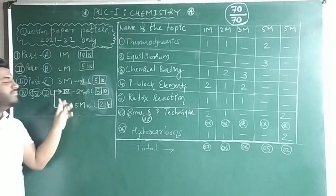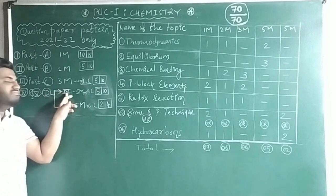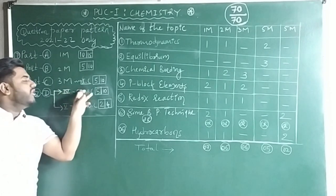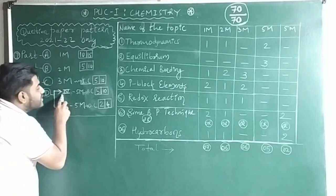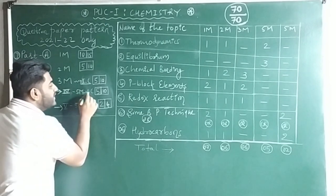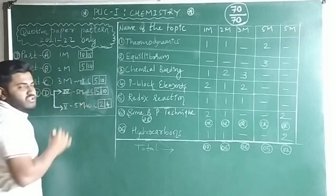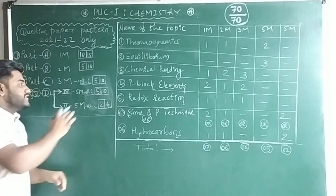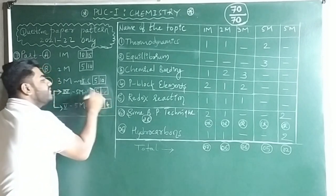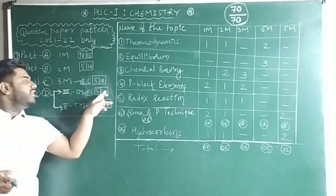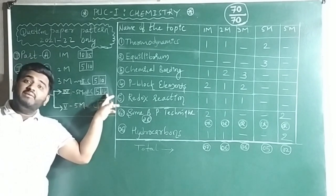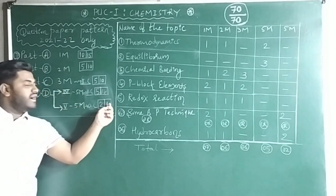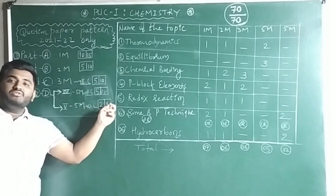In Part D, there are two main sections: main question number 4 and main question number 5. Main question number 4 has 11 questions from physical chemistry only, and you have to answer 5. Main question number 5 requires you to answer 2 questions out of 4, and all four questions belong to organic chemistry only.